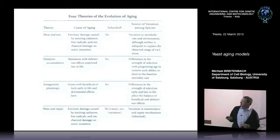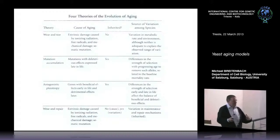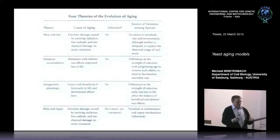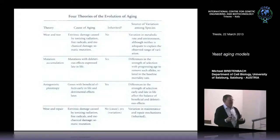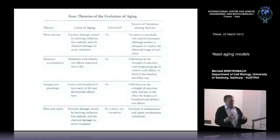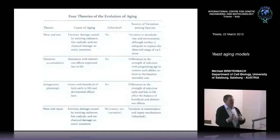Another important theory is mutation accumulation — do we age because over our lifetime we accumulate more somatic mutations? The short answer is yes, we do accumulate mutations, and you can measure it, though it requires the most advanced DNA sequencing equipment only now available. It is especially true for the mitochondrial genome. But whether this is actually the cause of aging is totally open — you must always be careful to discriminate between a correlation and a causal relationship.